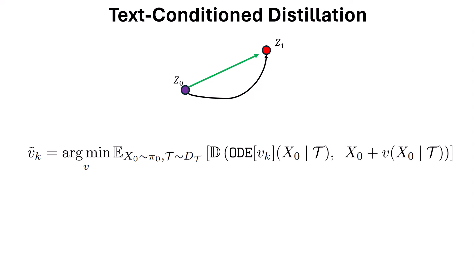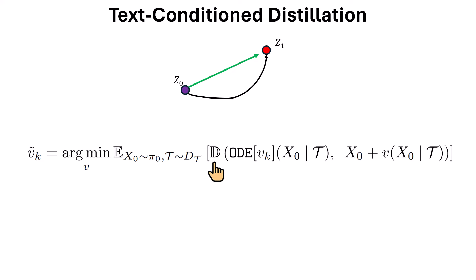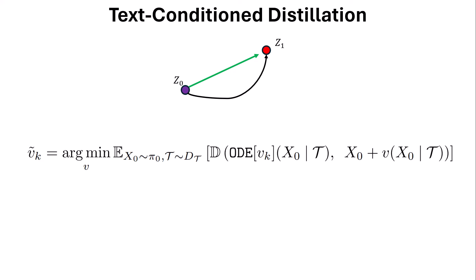The distillation objective is: find the v that minimizes the expectation over all x0 noises from pi0 and text prompts from dt, minimizing a similarity loss d. In other words, we maximize the similarity between the ODE of v1 (the original Stable Diffusion with 25 steps) and our proposed method x0 + a single step of v going from x0 to x1. We learn v and force it to reach z1 in a single step by distilling knowledge from the Stable Diffusion ODE.